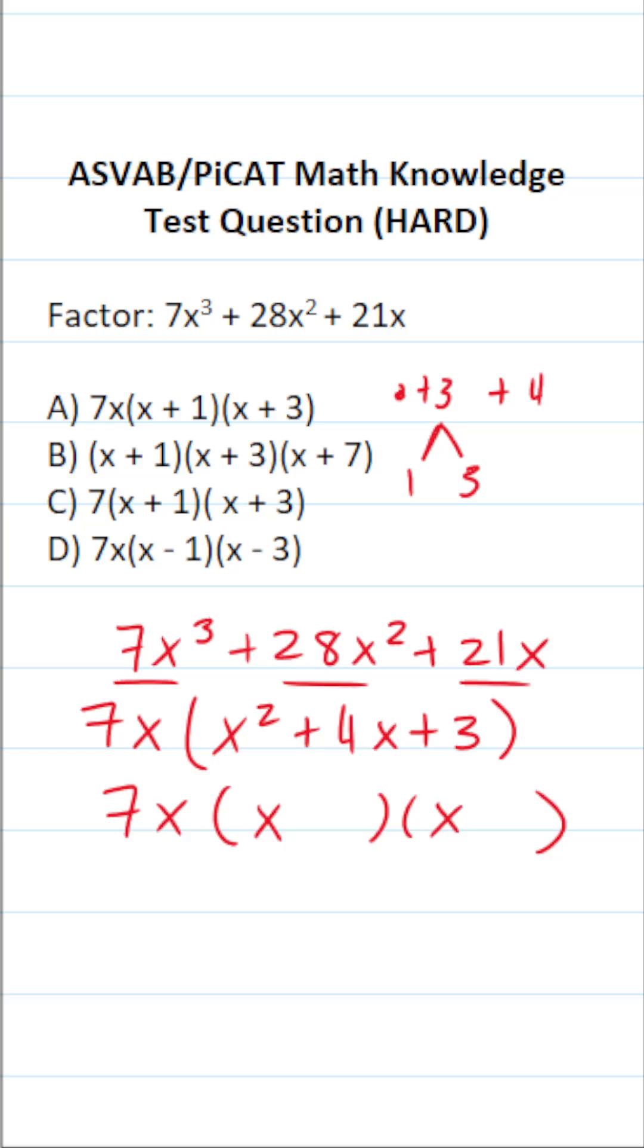1 times 3 is 3. 1 plus 3 is 4, so this becomes (x + 1)(x + 3), and now we've factored this one